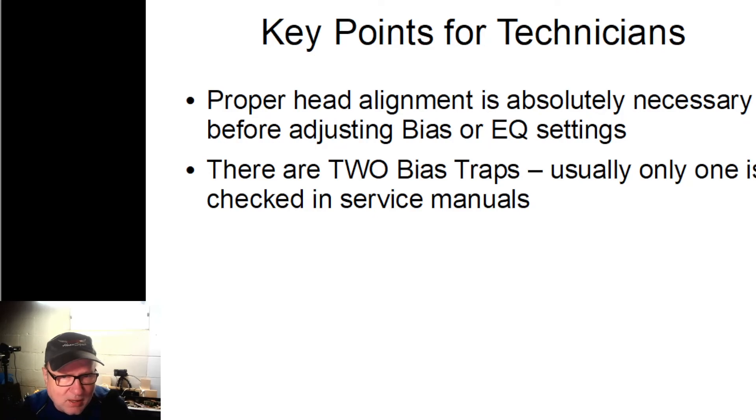And the other point is that there are actually two bias traps. The first one is the one we talked about that looks at the signal coming off the playback head. And the first thing it does is it passes it through a filter which blocks the high frequency, the 100 kHz signal, chop that off, take it away, and eventually all that would be left would be the audio signal.